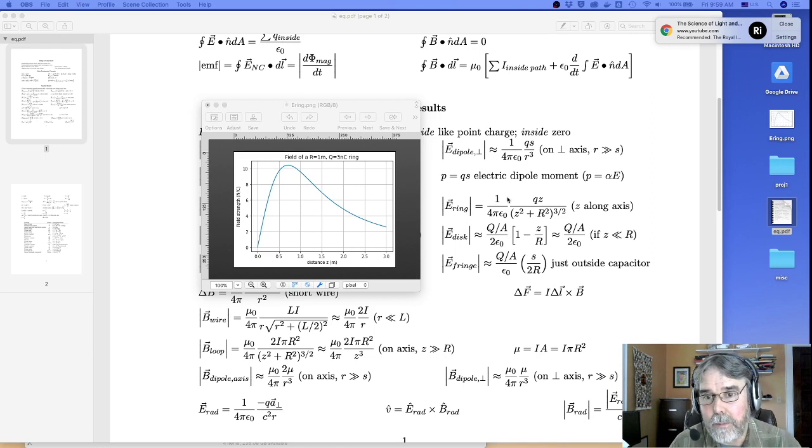I went ahead and put the document with the expression for the electric field, the magnitude of the electric field along the z-axis from a ring right here on the page and you can see it's a function of z. So the plan is to write that out as a function of z and then calculate the derivative, set the derivative equal to zero, solve for the value of z that satisfies that criteria and then see what it is.